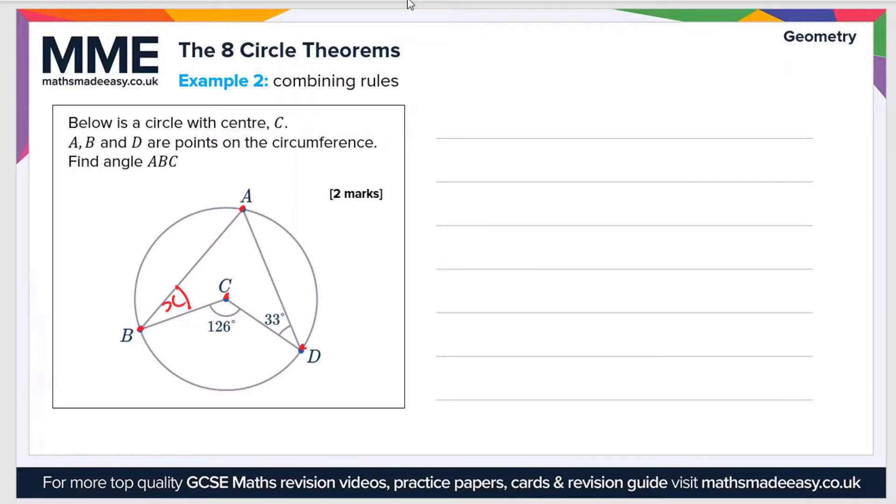So first of all, ABCD is a quadrilateral and the sum of the internal angles of any quadrilateral is 360 degrees. So let's just bear that in mind for now. And then next, let's just recognize that we have a single point here, C, at the center, and the sum of the angles around any point are 360 degrees as well.